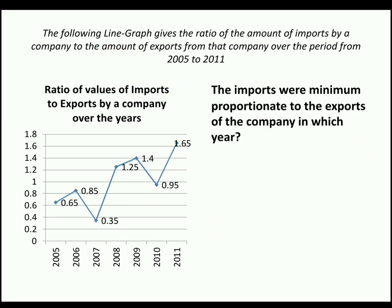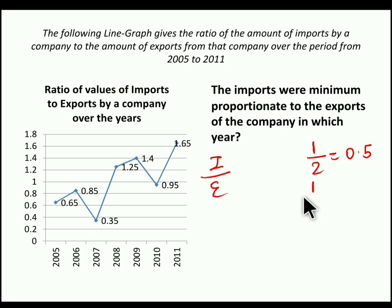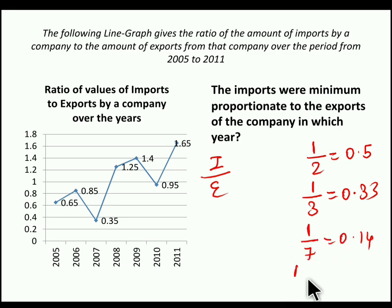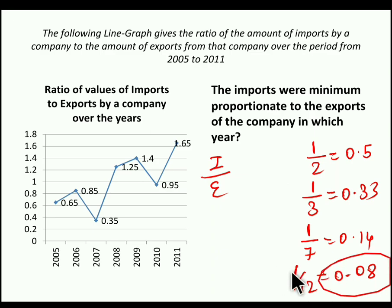Moving to the second question: in which year were imports minimum proportionate to the exports of the company? Import minimum proportionate to export means the value of import divided by export should be minimum. For example, if import is 1 and export is 12, the value is 0.08 — the smallest. Clearly, the ratio has a minimum value of 0.35 in the year 2007. So the imports were minimum proportionate to export in the year 2007, and that is our answer.